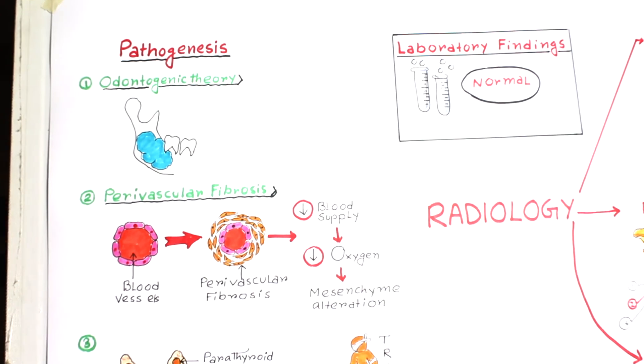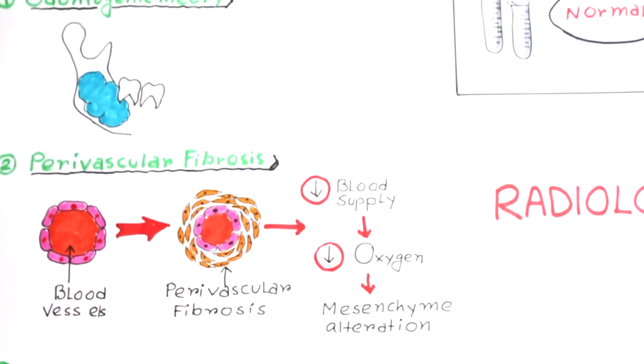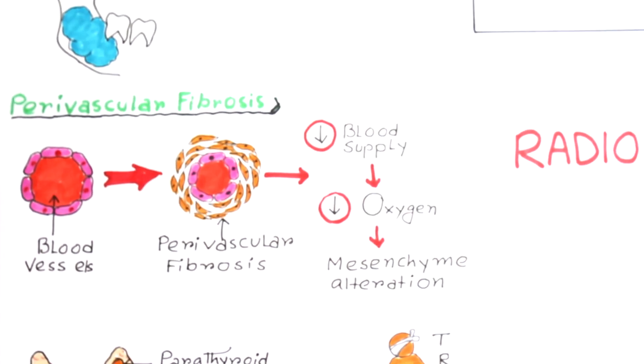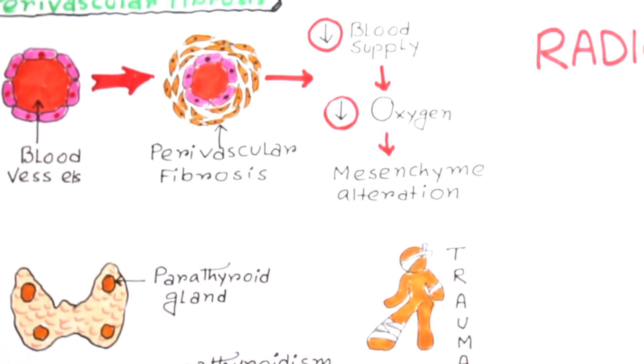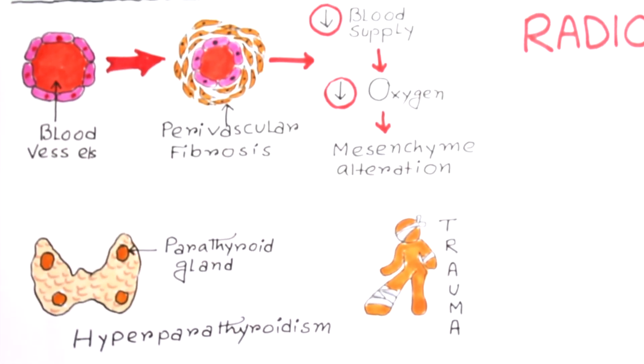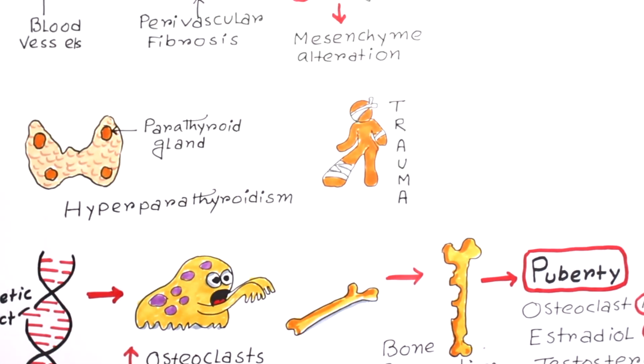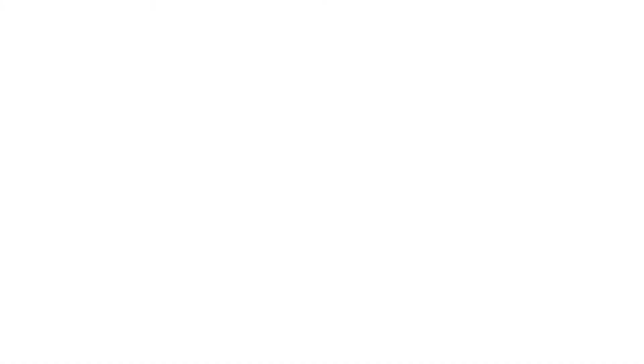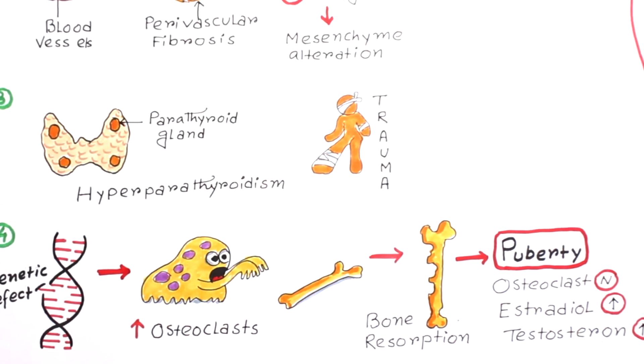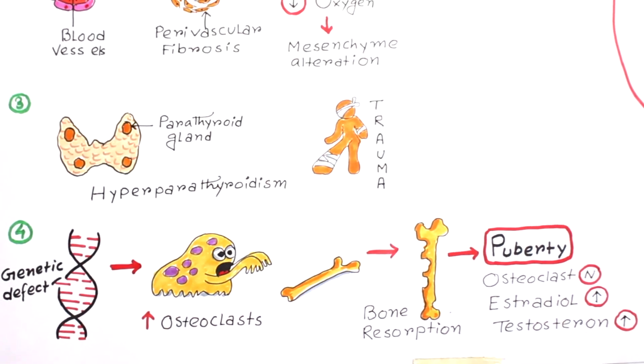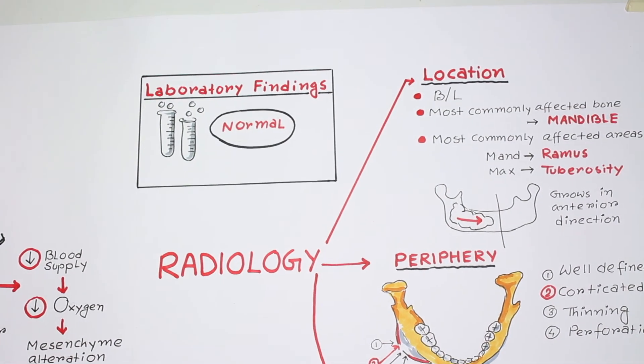Now a quick recap. In pathogenesis, according to odontogenic theory it is related to development of permanent tooth. Perivascular fibrosis causes narrowing of blood vessels which eventually leads to alteration of mesenchymal cells. Even hyperparathyroidism and trauma can lead to cherubism. And lastly, genetic defect is responsible for the localized increase in osteoclasts which normalized in puberty. Biochemical findings are typically normal.